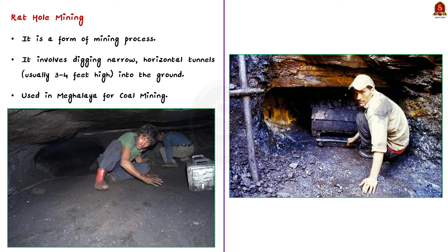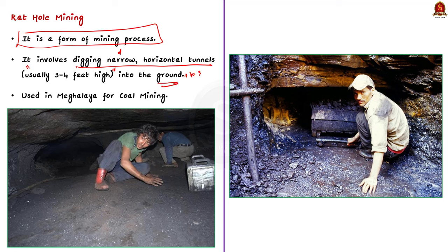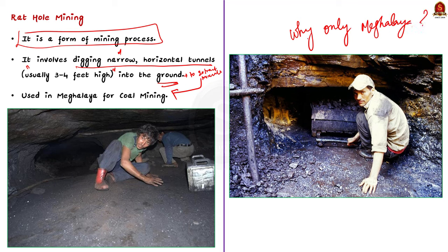Rat hole mining is a form of mining that involves digging narrow horizontal tunnels, usually 3 to 4 feet high, into the ground to extract minerals. In India, rat hole mining is mainly employed to extract coal and is typically used in regions like Meghalaya. You might ask why — states like Odisha, Madhya Pradesh, Chhattisgarh and Jharkhand also have coal reserves but do not employ rat hole mining. So what makes conditions in Meghalaya unique? In Meghalaya, rat hole mining was employed due to two main reasons.